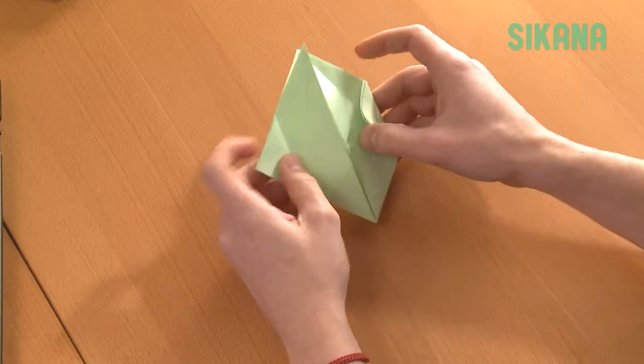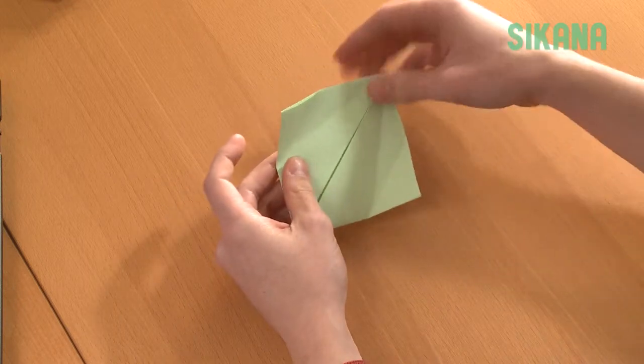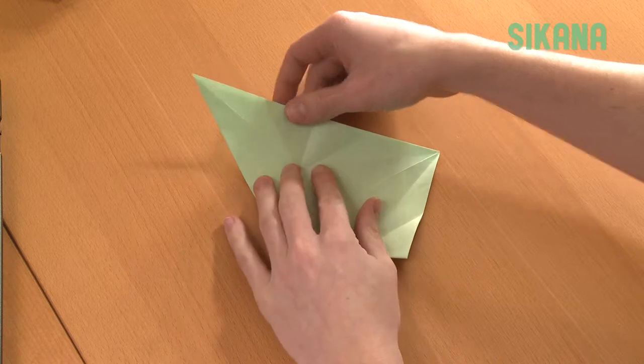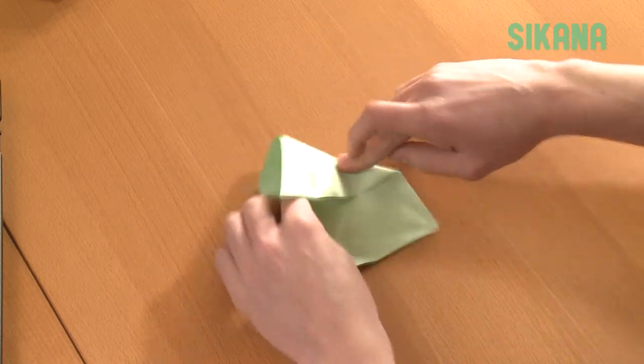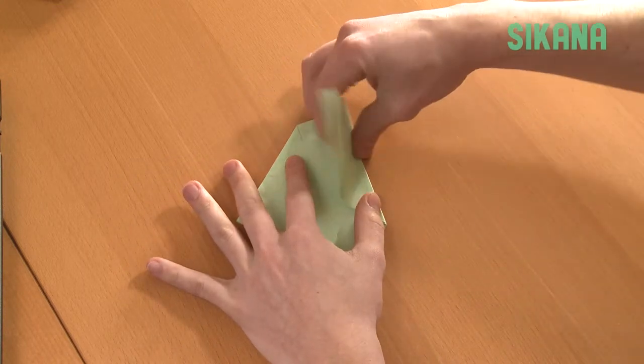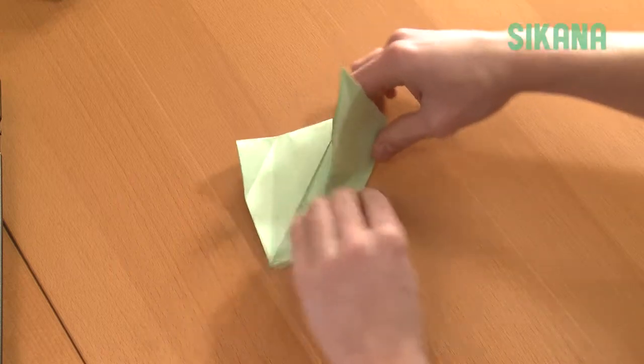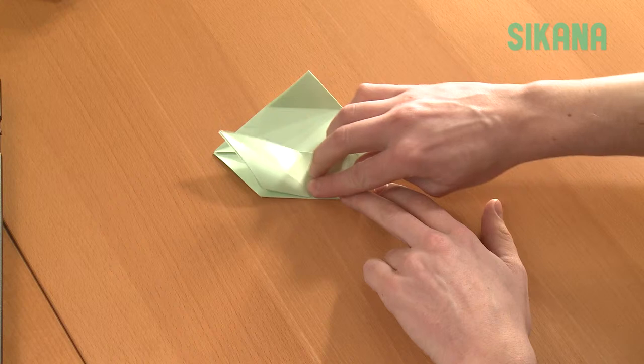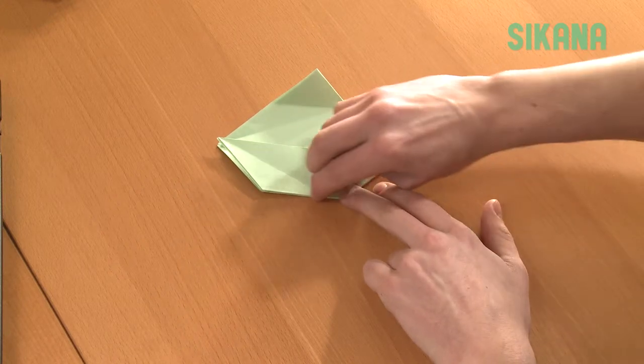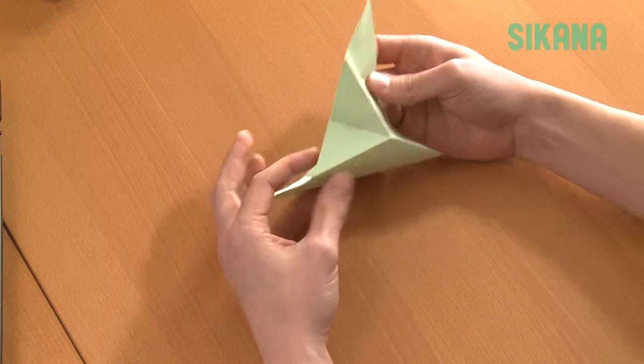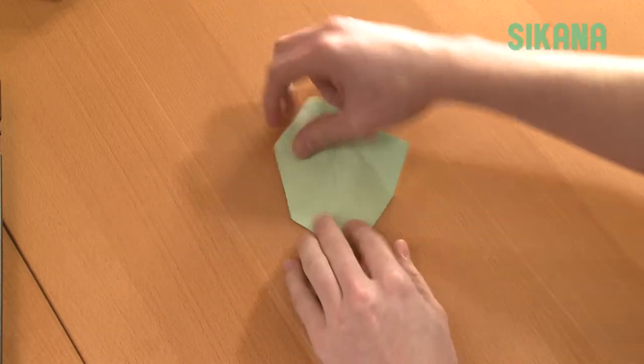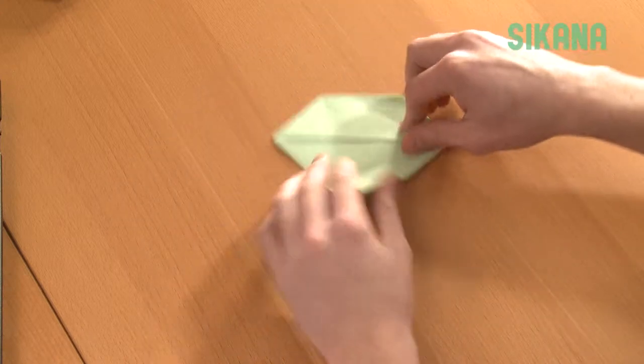Reopen both sides. Reopen the fold you made earlier and fold the point like this. It should look like this when you're finished. Make the same fold on the other side.